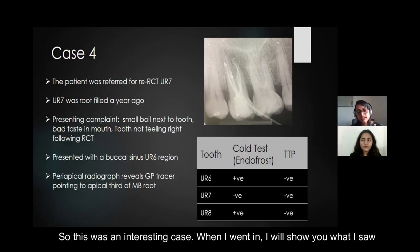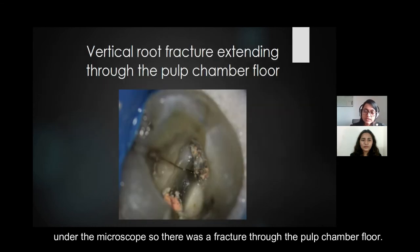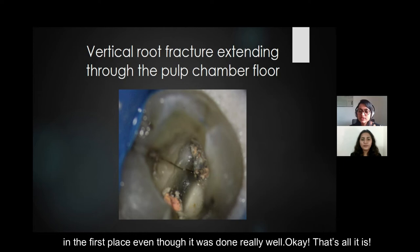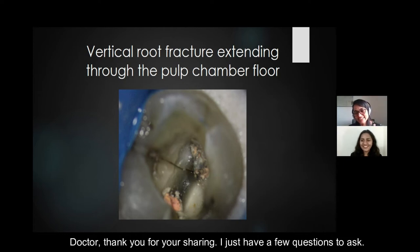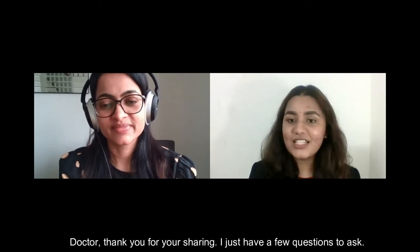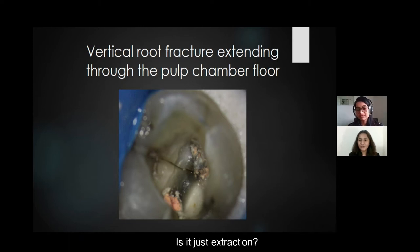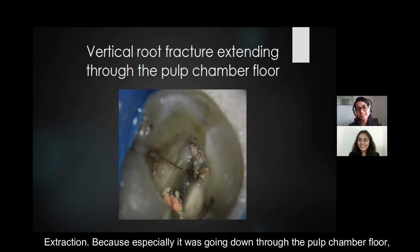This was an interesting case. Under the microscope, there was a fracture through the pulp chamber floor — one of the reasons why that root filling didn't work in the first place, even though it was done really well. Because it goes down through the pulp chamber floor, there's not much you can do; bacteria will continue to ingress. So this tooth was advised to be extracted.